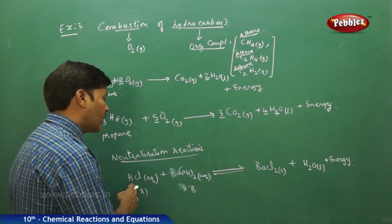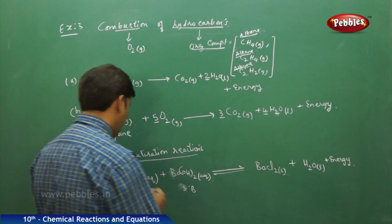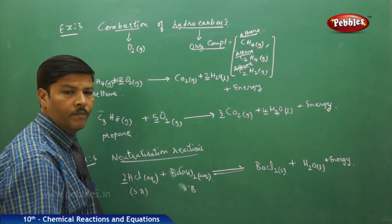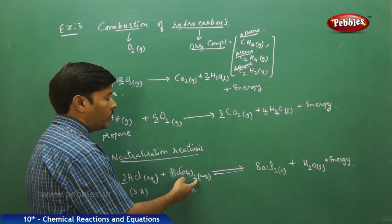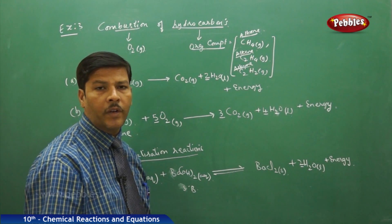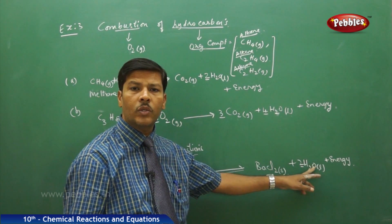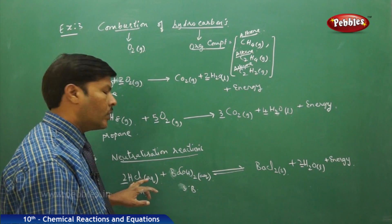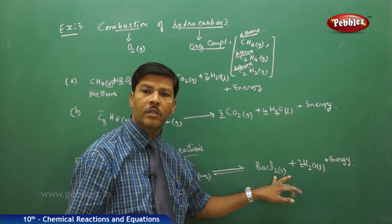Balancing this neutralization reaction: on the reactant side HCl has 1 hydrogen and 1 chlorine, while Ba(OH)₂ has 2 hydrogens and 2 chlorines on the product side. Place 2 as a molar coefficient beside HCl, giving 2 hydrogens and 2 chlorines on the reactant side. Ba(OH)₂ contributes 2 hydrogens and 2 oxygens; place 2 as a molar coefficient beside H₂O so 2 × 2 = 4 hydrogens and 2 oxygens are balanced. We have 1 barium on each side and 2 chlorines on each side. The entire reaction is balanced.